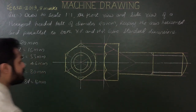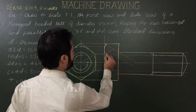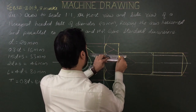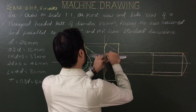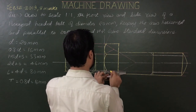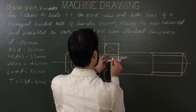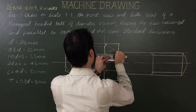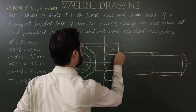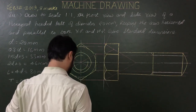Next, show the vertical faces of the hexagonal bolt head. From the two corners, draw lines parallel to the central axis to represent the faces.